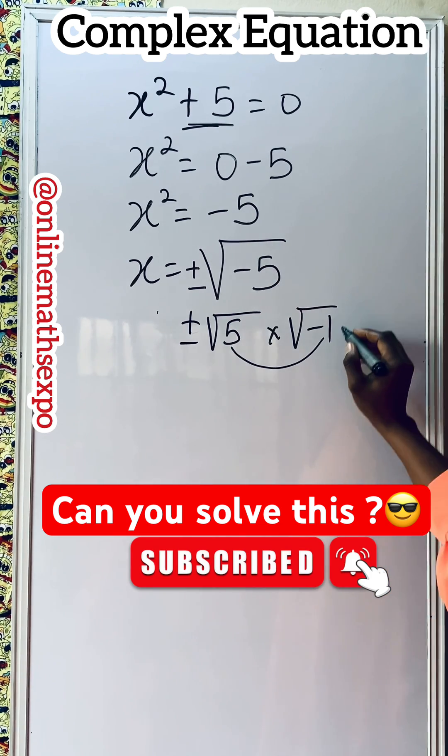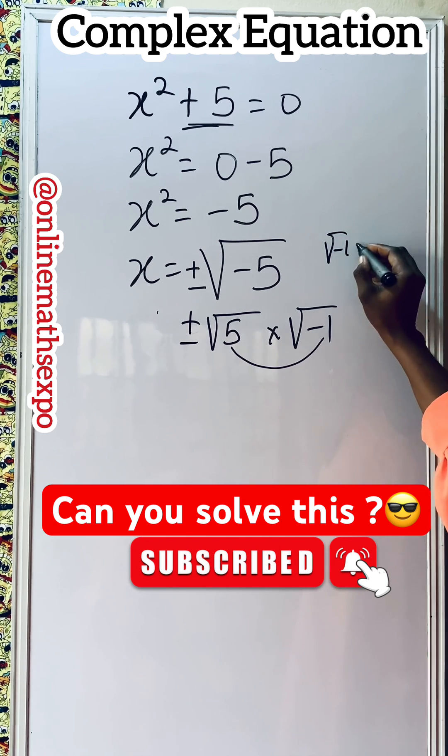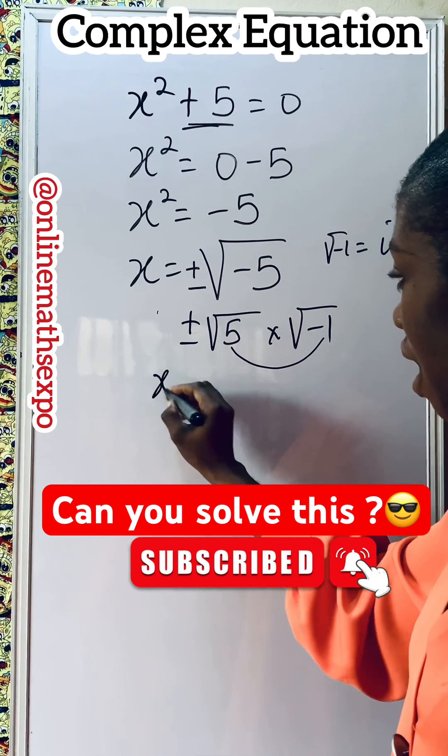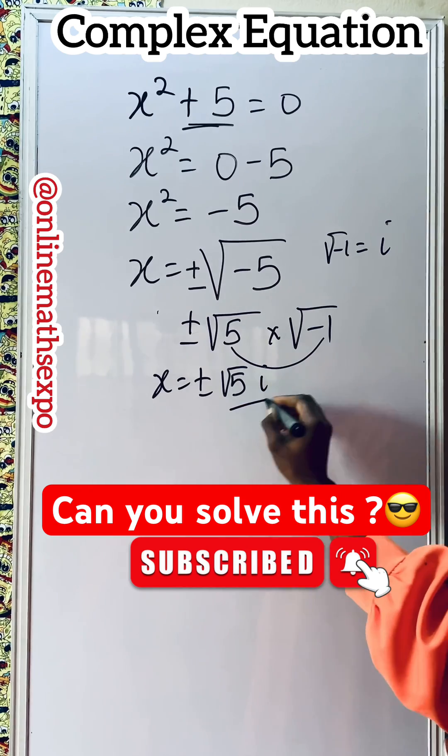And remember that in the complex world, square root of negative 1 is written as i. So this will give us x as plus or minus square root of 5i as an answer.